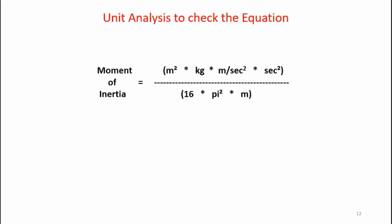Now let's do a unit analysis to check the equation. So here my units put in for the parameters. I have the second squareds cancel out. These two distances in meters cancel out. I end up with simply kilograms meters squared. And so that's the units of moment of inertia and those are indeed the right units.